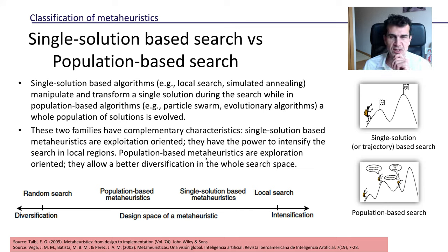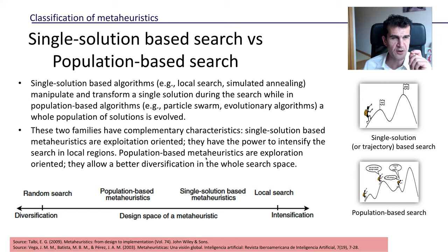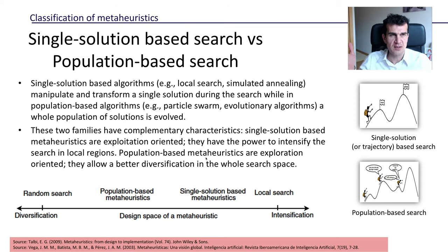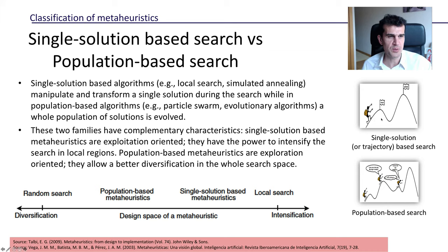Finally, probably the most important and most used criterion is whether the meta-heuristic is single-solution based or population-based. Single-solution based algorithms — also called trajectory-based algorithms — work with one single solution at any point in time, while population-based algorithms work with a whole population of solutions simultaneously. A nice way of looking at this: single-solution is like one hiker walking in the mountains by himself, while population-based would be a whole group of hikers trying to find the peak.